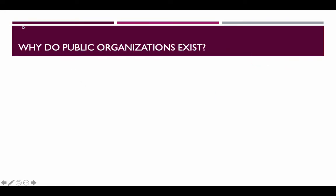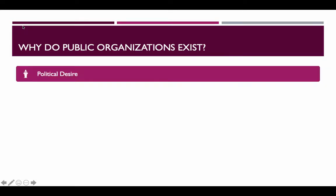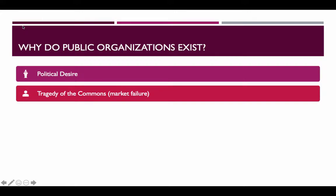First, we'll talk about why public organizations exist. One of the main reasons is political desire — the body politic has decided that this organization should exist and government has willed it so. There are also market failure reasons: markets fail in traditional ways or in ways that don't serve public interests.